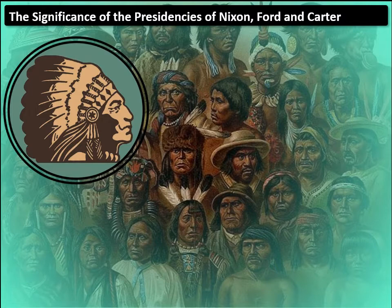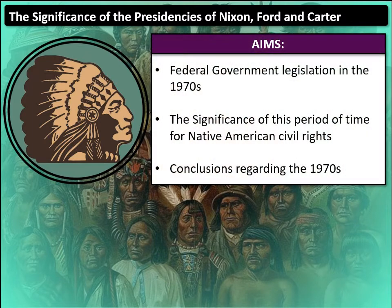In this video we're going to aim to do three things. We're going to recap some of the federal government's legislation in regards to Native Americans that was put forward and signed into law in the 1970s. We're then going to use that to think about the significance of this period for Native American civil rights, and then we'll make some broad conclusions regarding the 1970s.